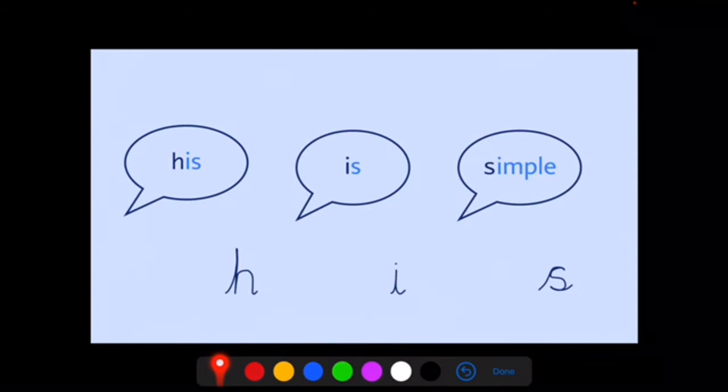When we hear h, we write the letter h. When we hear ih, we write the letter i. And when we hear s, we write the letter s.